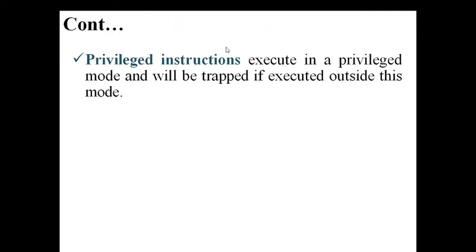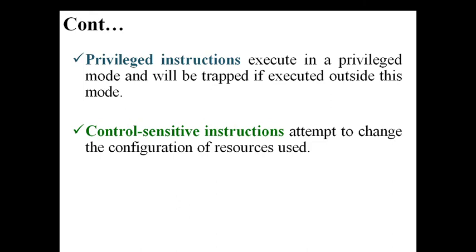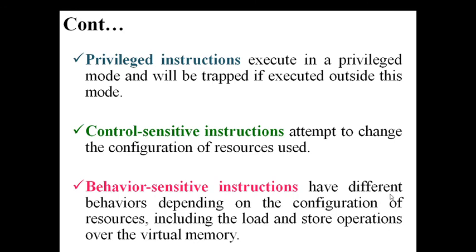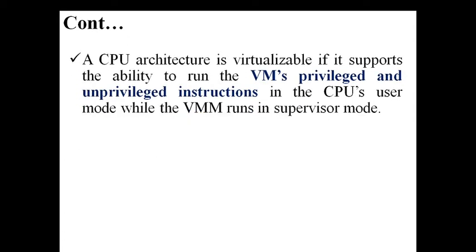Privileged instructions execute in privileged mode and will be trapped if executed outside this mode — we cannot mask them. Control-sensitive instructions attempt to change the configuration of resources; if that configuration change is not supported by the operating system, the system may suffer. Behavior-sensitive instructions behave differently depending on the configuration of resources, including load, store, and operations — they may deviate from normal operation. These are the three categories of critical instructions.